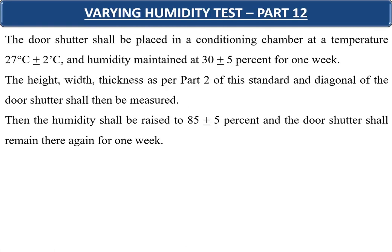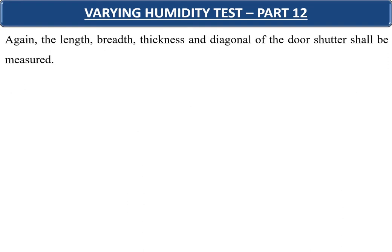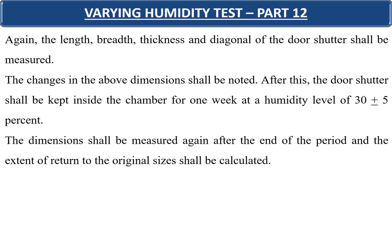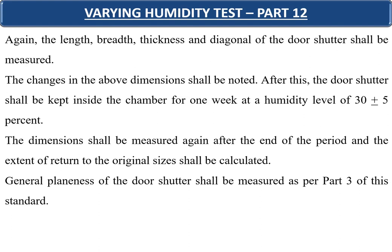Part 12 covers the varying humidity test. The door shutter is conditioned at 27 ± 2°C and 30 ± 5% humidity for one week, then dimensions are measured. Humidity is then raised to 85 ± 5% for another week with dimensions re-measured, noting the changes. Finally, the shutter is kept at 30 ± 5% humidity for one more week and dimensions measured again to calculate the extent of return to original sizes. General plainness is also measured as per Part 3.